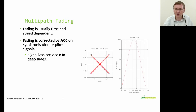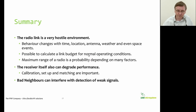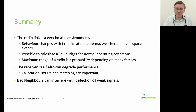Fading is a key concern — you can have a very healthy signal one moment and then drop to zero before coming back up again. As you can see, the radio link is a very hostile environment with behaviour changing with time, location, weather and even space events. It's possible to calculate a nominal link budget for normal operating conditions, but the maximum range depends on many factors. The receiver itself can also degrade performance, so it's important to calibrate, set up properly and do RF matching.